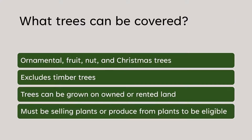TAP covers ornamental, fruit, nut, and Christmas trees, but not timber trees. You must be selling either the plants themselves or the produce from the plants — selling apples or growing apple trees to sell are both covered. Trees can be grown on owned or rented land, so nurseries with fruit trees in pots on rented land would still qualify.